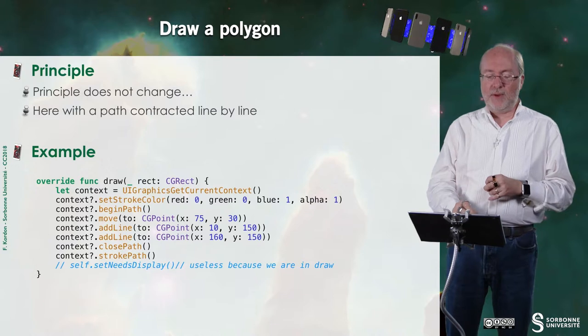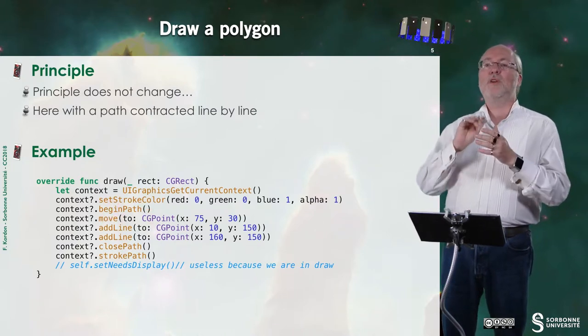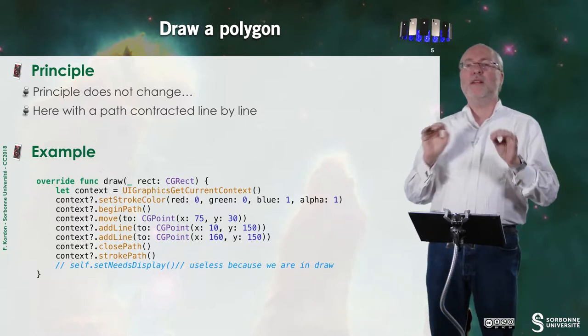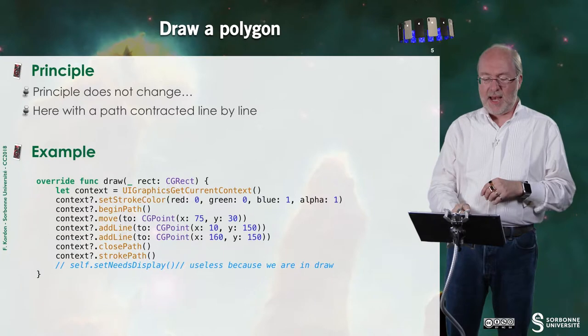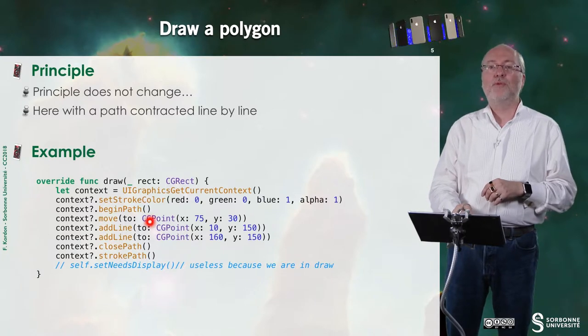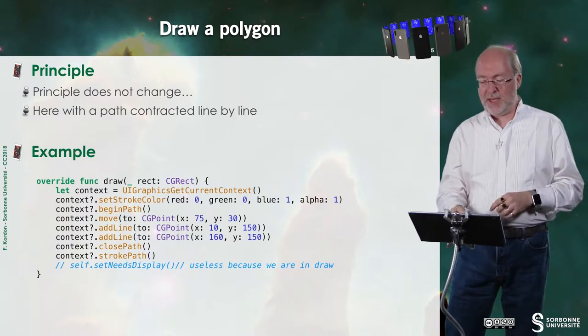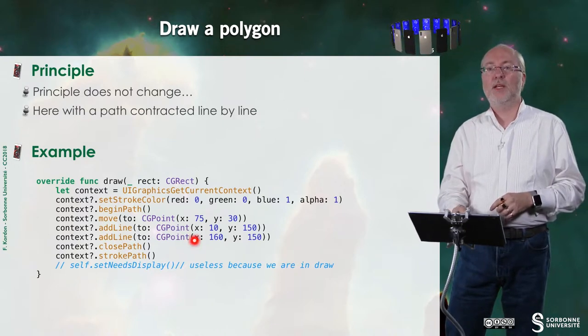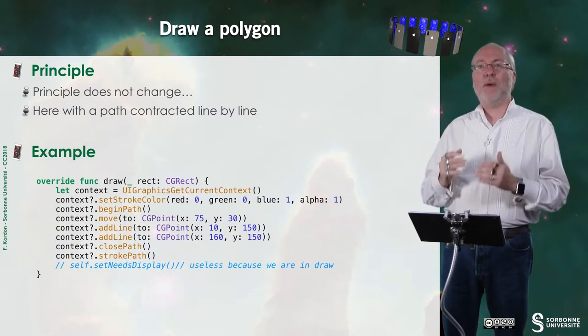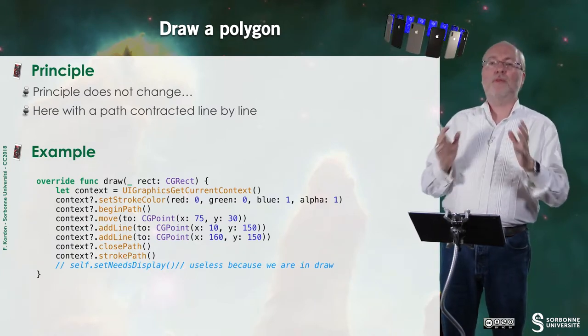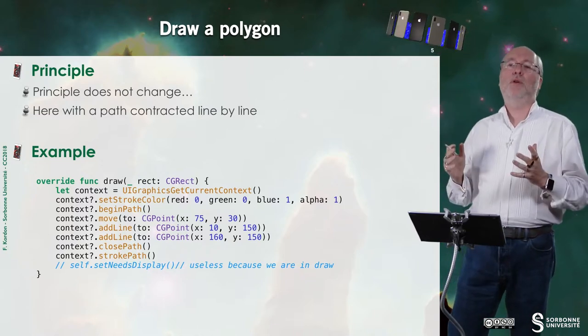Here I define the beginning of a path, and I move to a given point. I don't draw anything. I just say I want to start there. Then I draw a line from the point I was to the next point I specify here. And I do it again. And then I request the path to be closed. I could have the path open, but here I want to make a triangle.